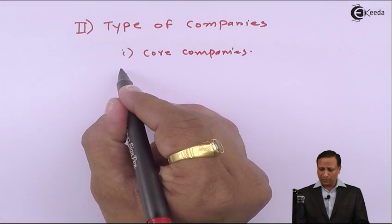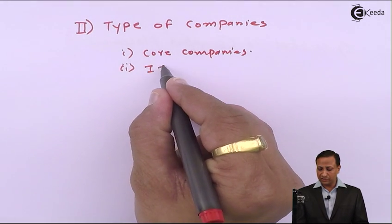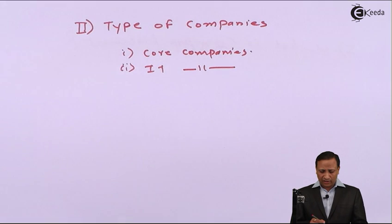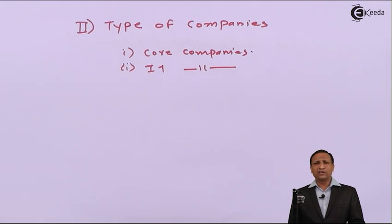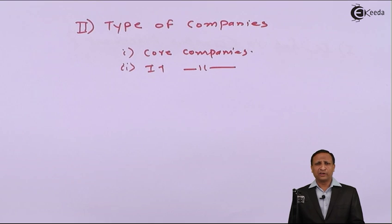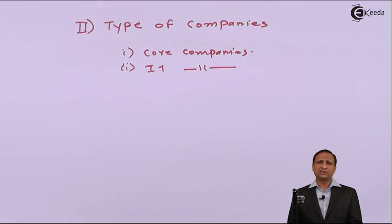The second type of categorization is IT companies. All of you are aware that IT companies are related to or dealing with software. Majority of these companies need students from an IT and computer background, but this is not limited to IT and computer background — IT companies also widely recruit students from other branches as well.